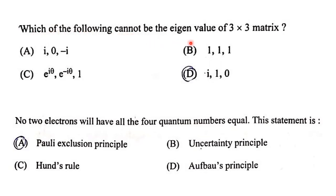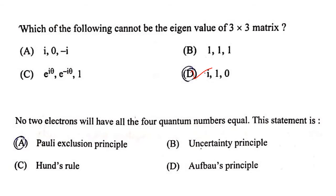Next question: which of the following cannot be the eigenvalue of a 3×3 matrix? In option A, {i, 0, −i} — this can be eigenvalues of a 3×3 matrix. In B, all are 1 — also possible. In option C, {e^(iθ), e^(−iθ), 1} — also possible. In option D, only 1 and i are there, meaning −i is absent, so this cannot be a valid eigenvalue set for a 3×3 matrix. Therefore, D is the answer.